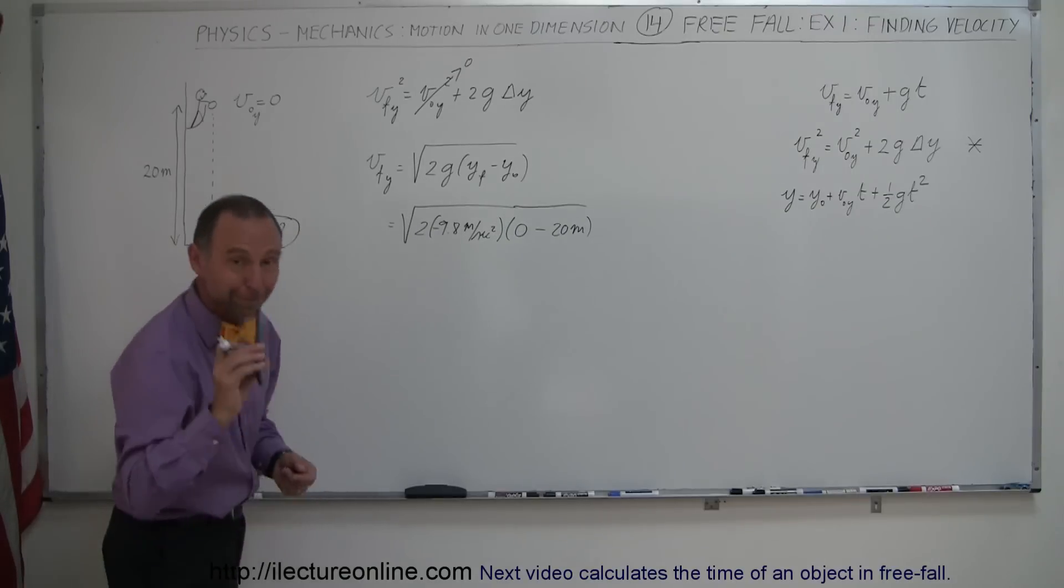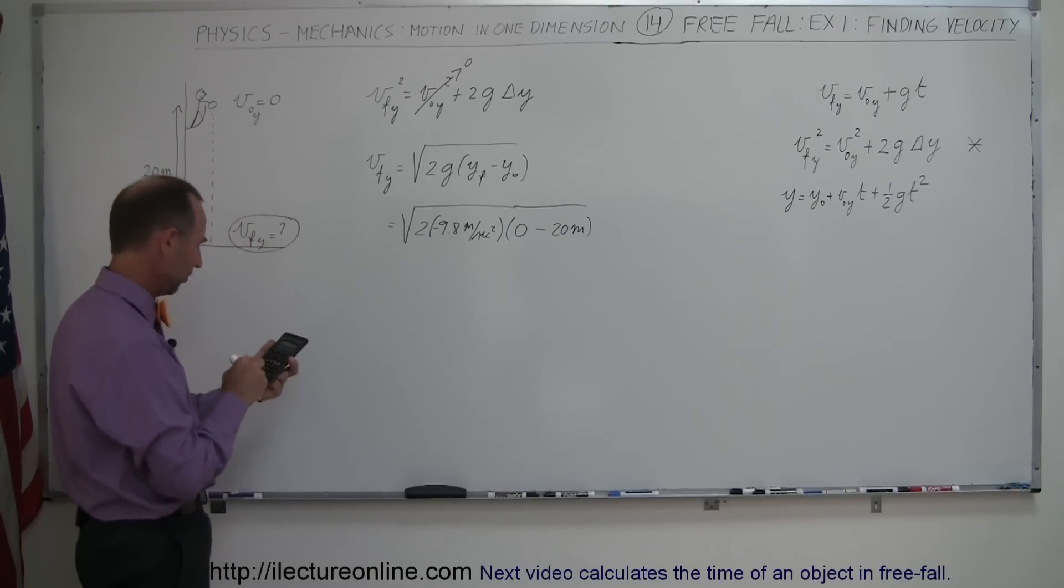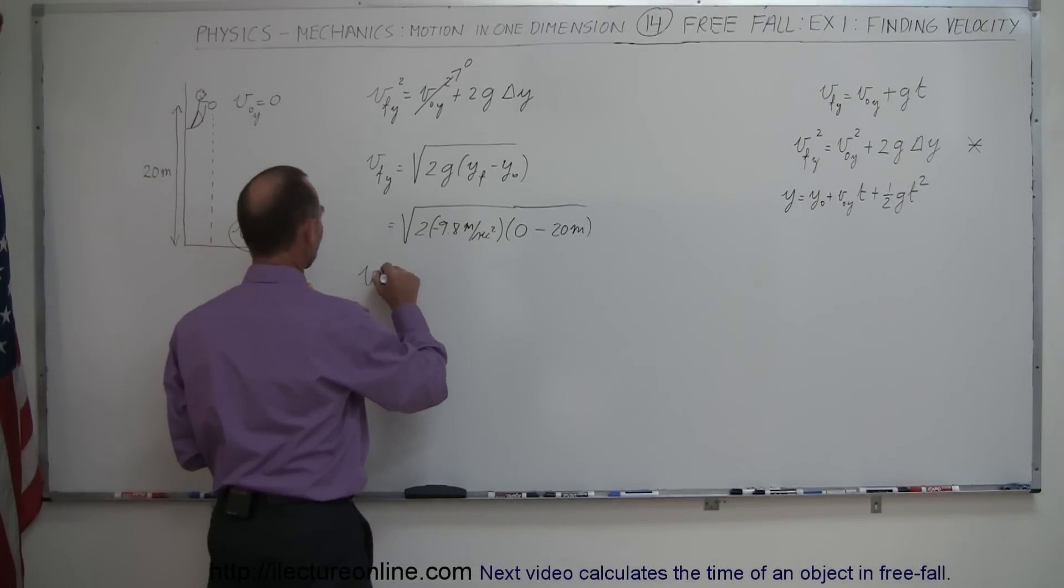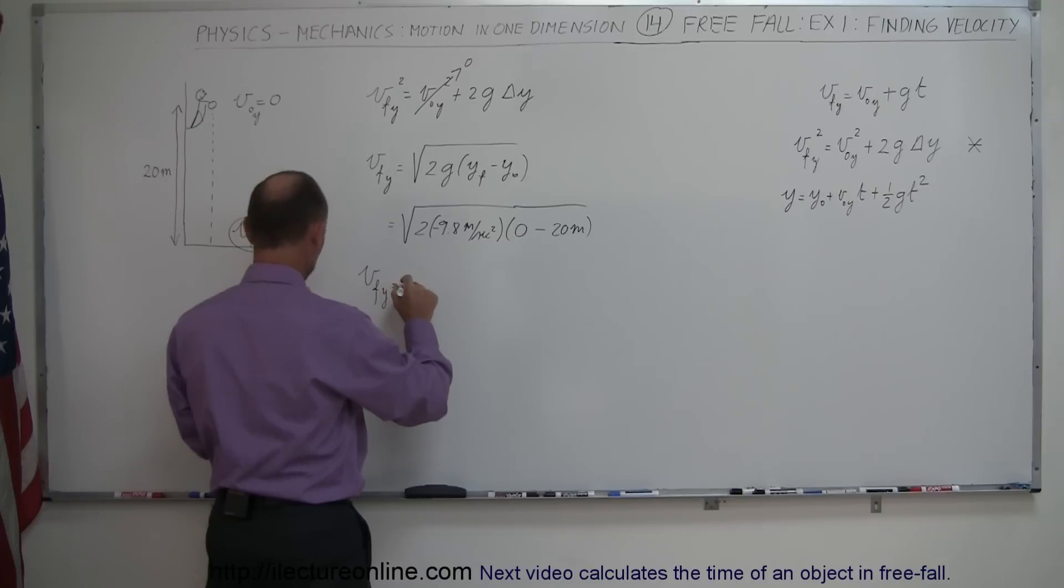Let's grab a calculator and see what the answer is. We have 20 times 2 times 9.8, take the square root, and v-final in the y-direction equals 19.8 meters per second.